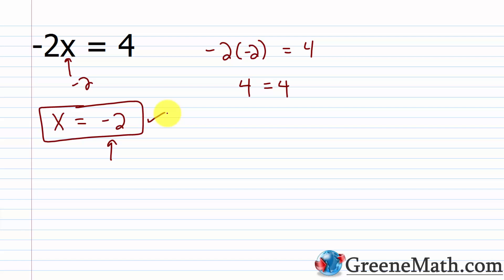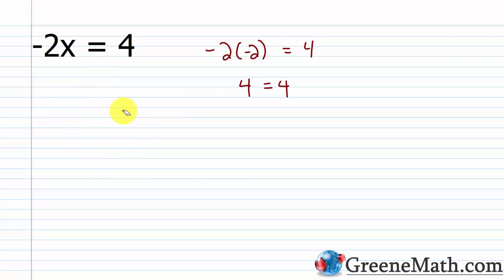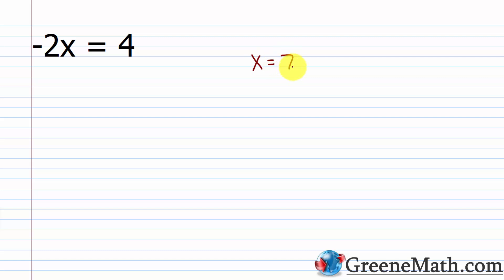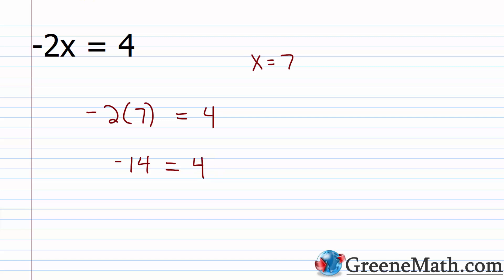If I choose anything else for x, this is no longer a true statement. For example, if x equals 7, negative 2 times 7 is not equal to 4 — negative 2 times 7 is negative 14, that's not equal to 4. Only if I use x equals negative 2 will this equation be true.